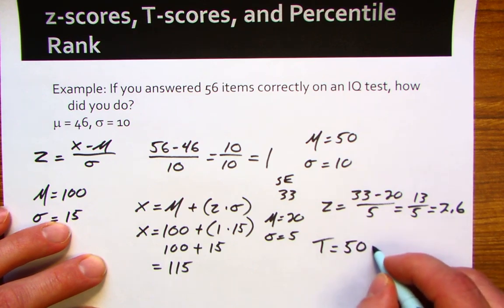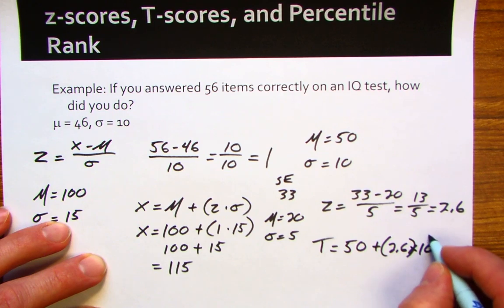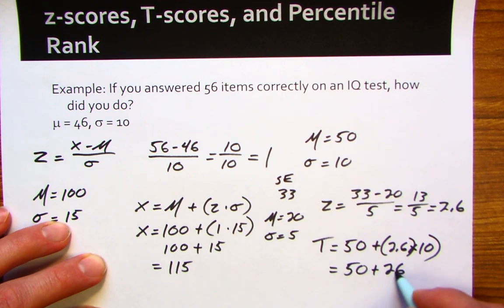The mean is 50, z is 2.6, times 10. 50 plus 26 equals 76. 2.6 times 10 gives us 26.